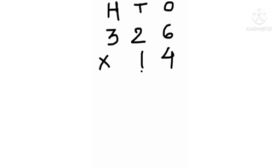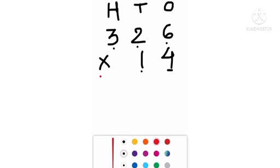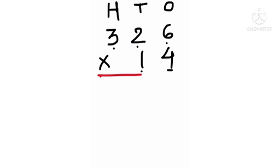In 14, the digit 4 is at the 1s place, so we multiply 4 with all the digits: 3, 2, and 6. Starting with 4 sixes — that is 24 — we write 4 and carry 2 over to the 10s place.